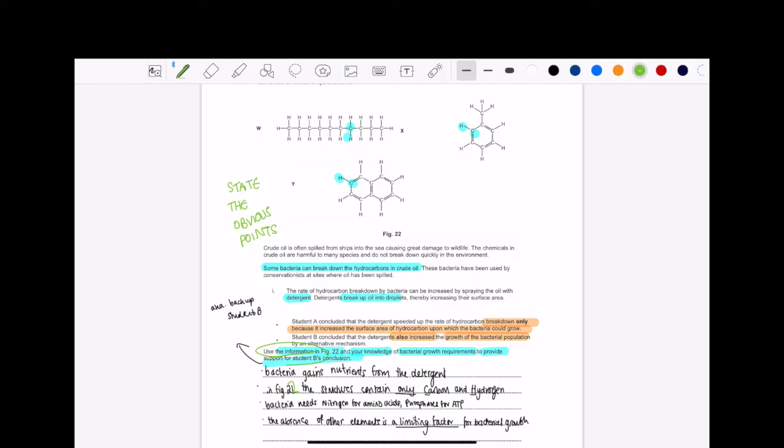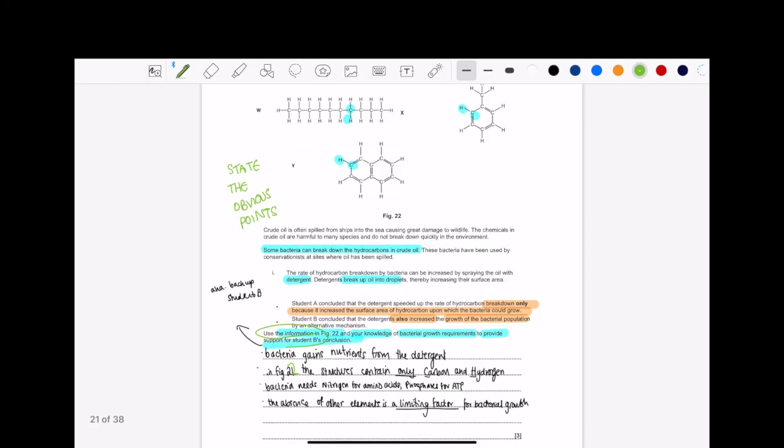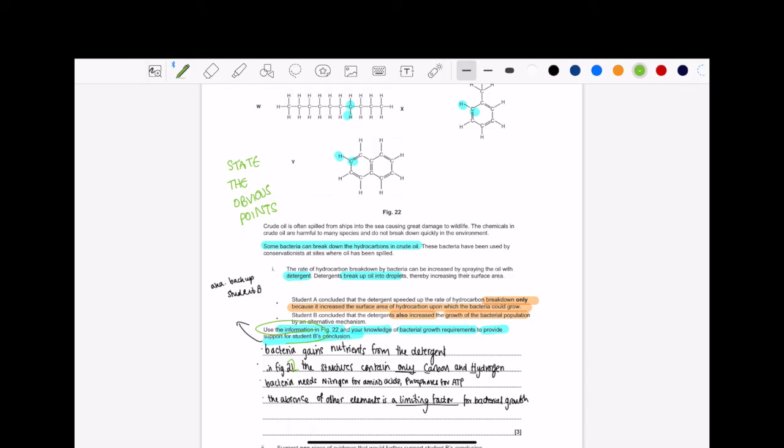So you could have specified anything. You could have said oxygen for aerobic respiration. They need nitrogen for amino acids, as I said, and phosphates for ATP. They need that, right? So that's why the detergent is so useful is because that's where they can get the other elements from, because they can't get all of it from the crude oil. And the last point is that the absence of other elements is a limiting factor for bacterial growth.